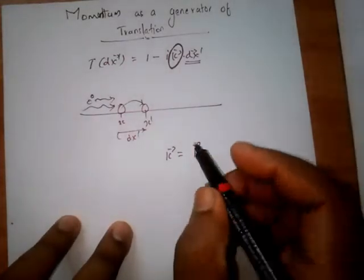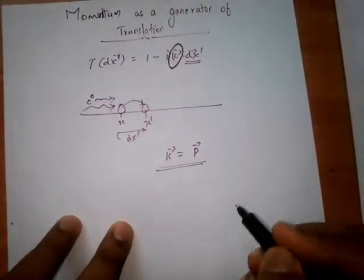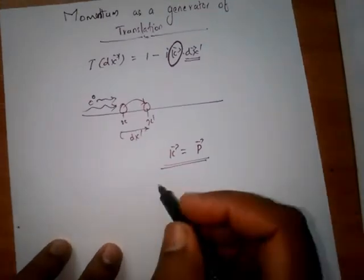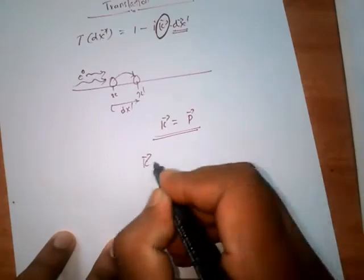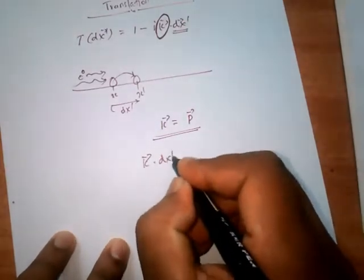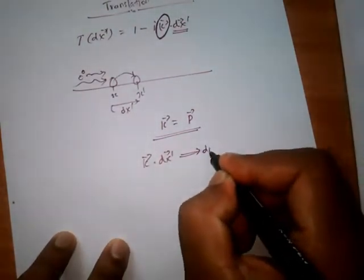But actually we cannot directly write k equal to p, because in the last class we have discussed that the quantity k·dx' should be dimensionless.